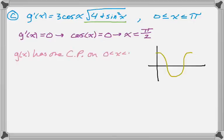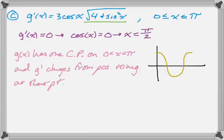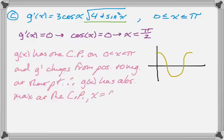So g of x has one critical point on the interval from 0 to pi. And at that critical point, g prime changes from positive to negative. So that means that that point, x equals pi over 2, is the absolute maximum of g of x on the interval.